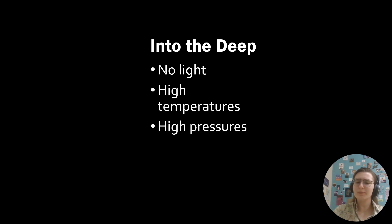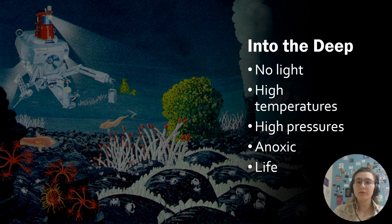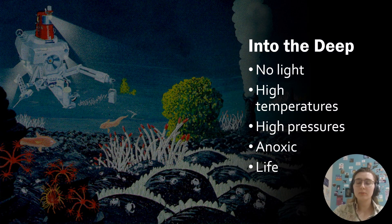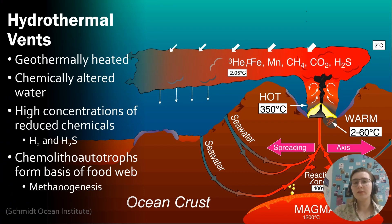In 1977, the field of oceanography was irreversibly changed. In areas of the ocean far too deep for light to ever reach, and at extremely high temperatures and high pressures, and in anoxic water, there was life. These oases of life in the deep sea are known as hydrothermal vents. Here, geothermally heated water is expelled through the Earth's crust.